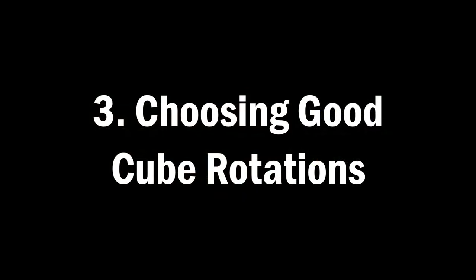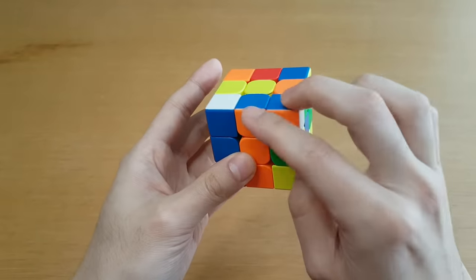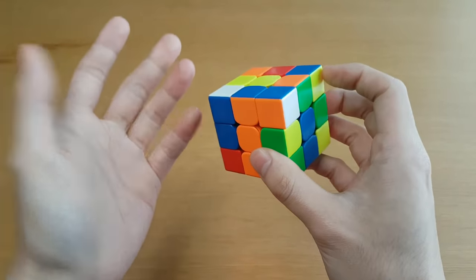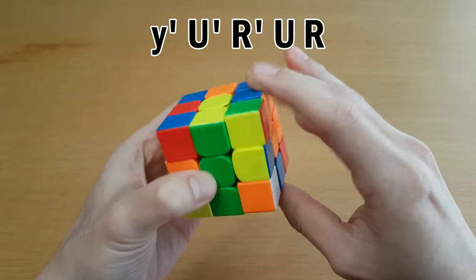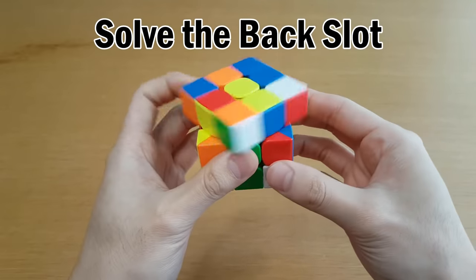Number three, choosing good cube rotations. Avoid cube rotations when possible, but not always. Sometimes it's just fastest to insert with a cube rotation. But usually when you have to cube rotate, there are actually two choices of which way you can rotate. The general rule when you have to rotate is to solve the back slot.